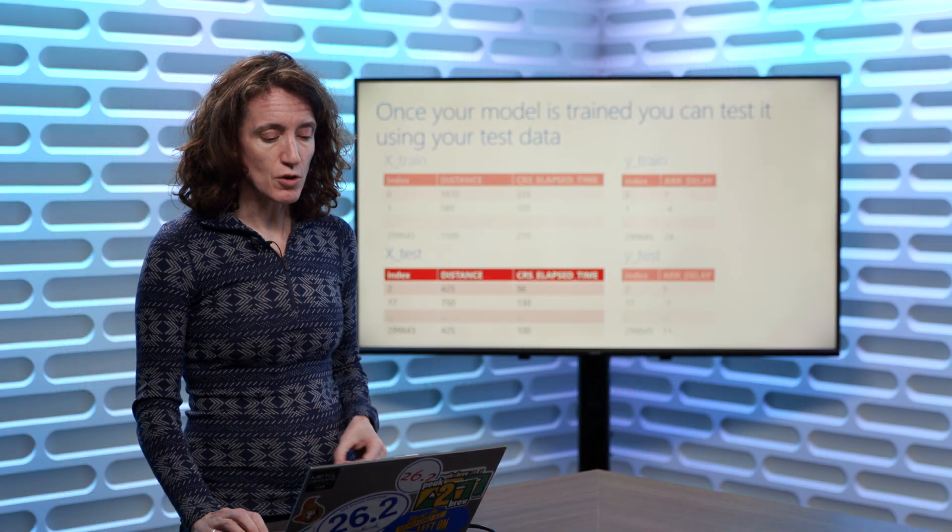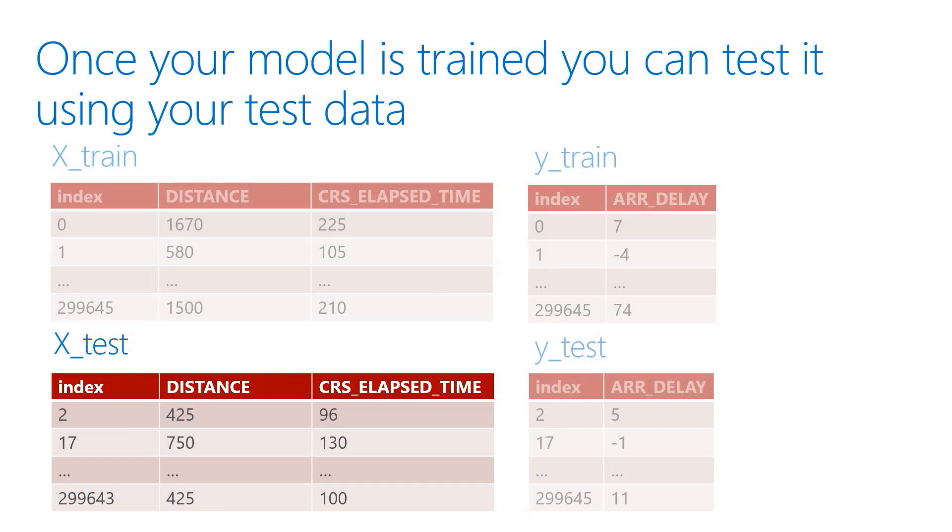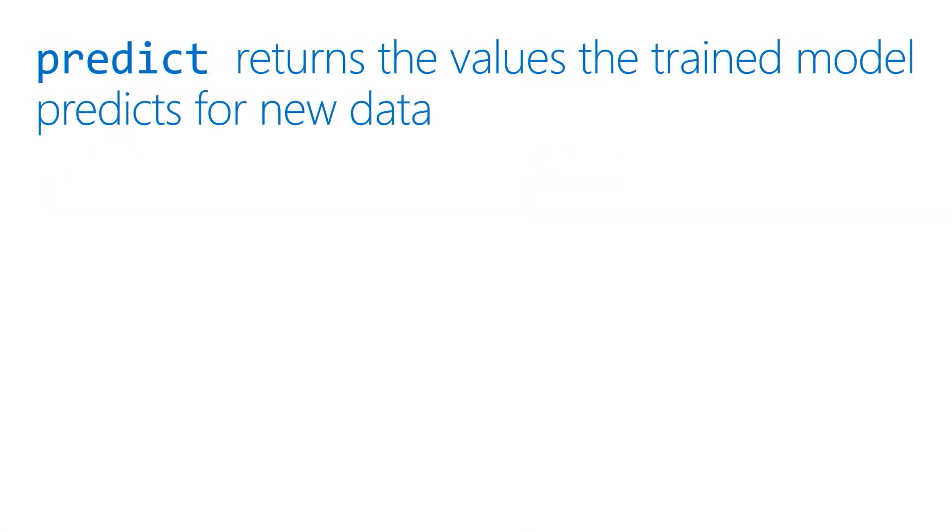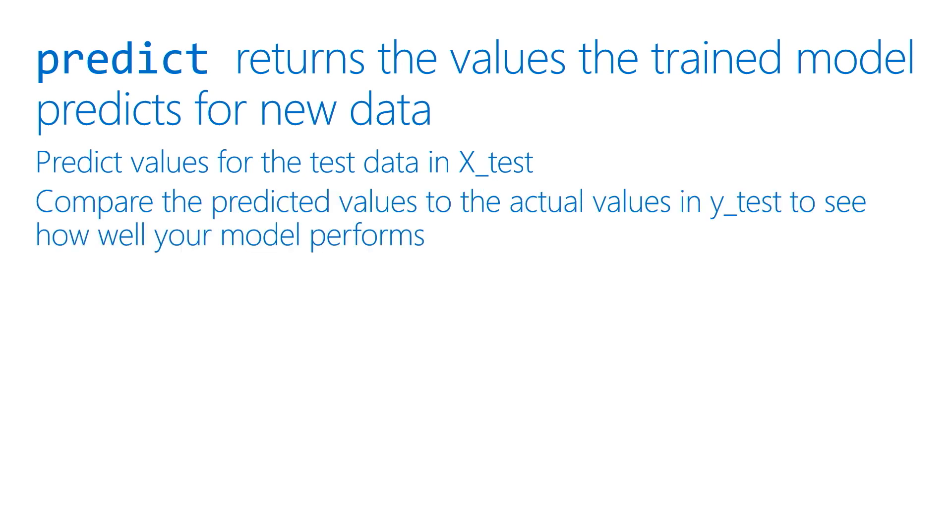So what we can do is take that x_test data we put aside, and we're going to use that to test our model. So we use predict is the method that we typically use on the different models to say, here are some values that we would like to test with, please try and predict values for those different values in our test data. So we take the data in x_test, and we pass that in using our regressor, which is the model object we had created, and we call predict, and we pass in the test data, and it will pass back a prediction for each of the rows of test data.